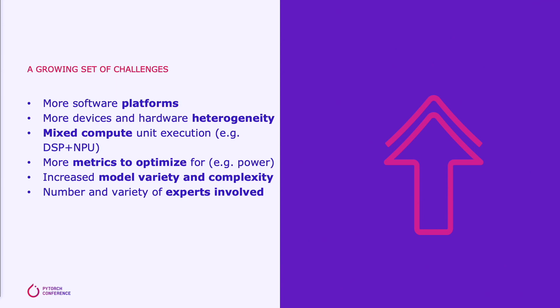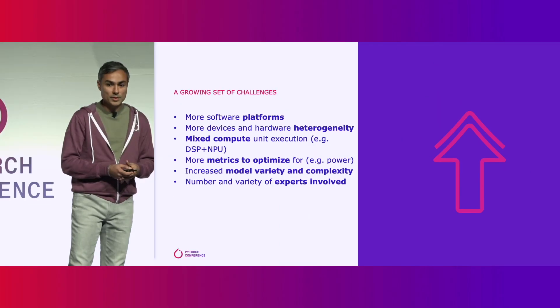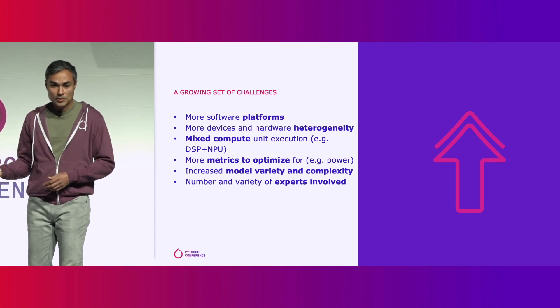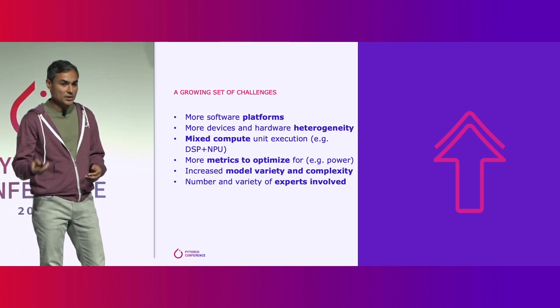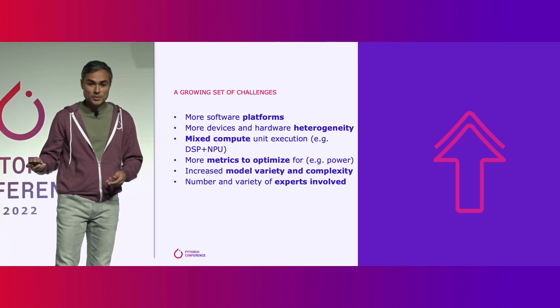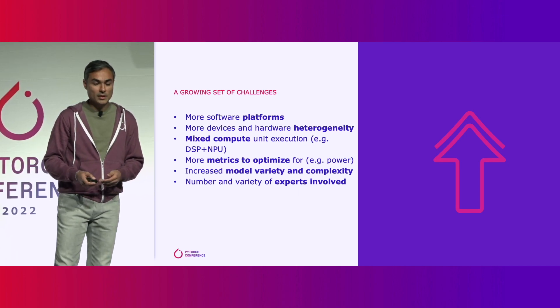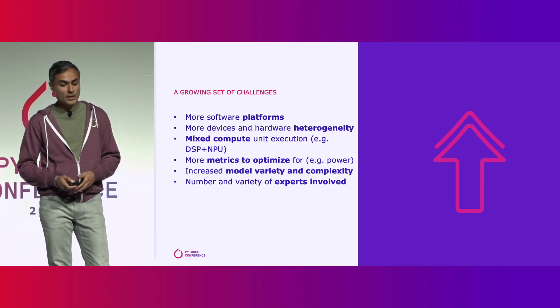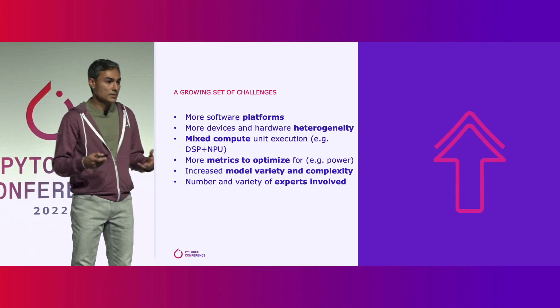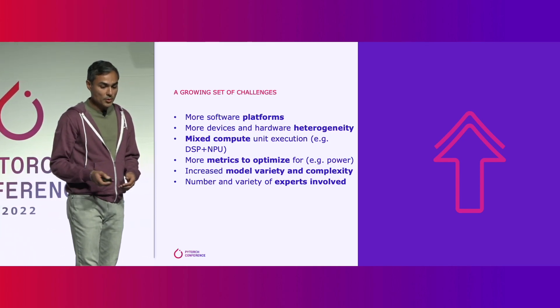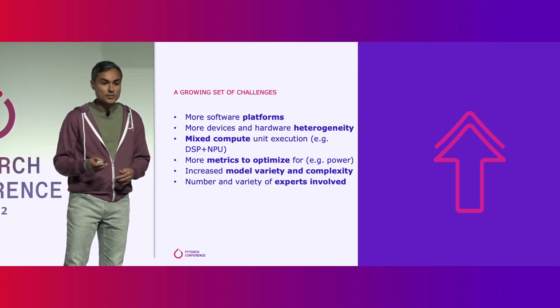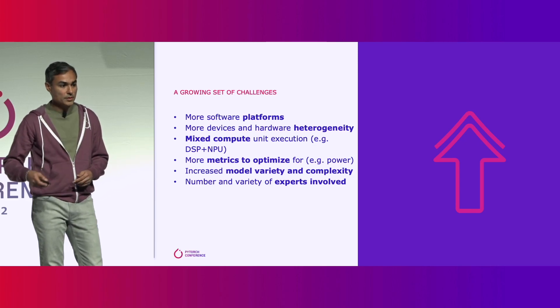We obviously have more software platforms — it's not just about Android and iOS. There are a lot more devices, which translates into hardware heterogeneity. The framework needs to support optimization and targeting for mixed compute execution, where a model or program can partially execute across different compute units — for example, running partially on a DSP, partially on an NPU. There are more metrics to optimize beyond just performance; power consumption is a very important one for edge computing. We've also seen increased model variety and complexity, and the number of experts involved has grown, making the process of bringing research to production much more interactive.